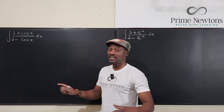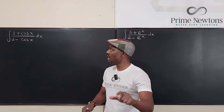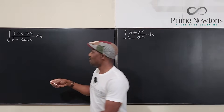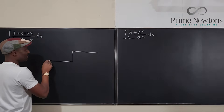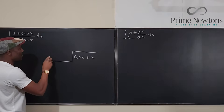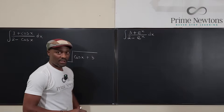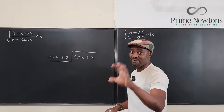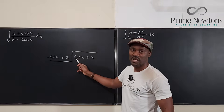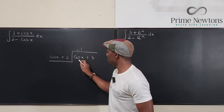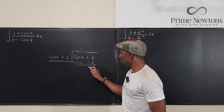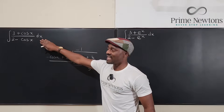There are many strategies for integrating this, but the one I think is most efficient involves doing long division or rewriting. So I can do some long division: put cosine x plus 3 on top, and negative cosine x plus 2 on the bottom — as if you're writing a linear function with the variable first. You then ask: what would I multiply negative cosine x by to get cosine x? The answer is negative one. When you multiply, you get cosine x minus two, and when you do your subtraction, the remainder is five.